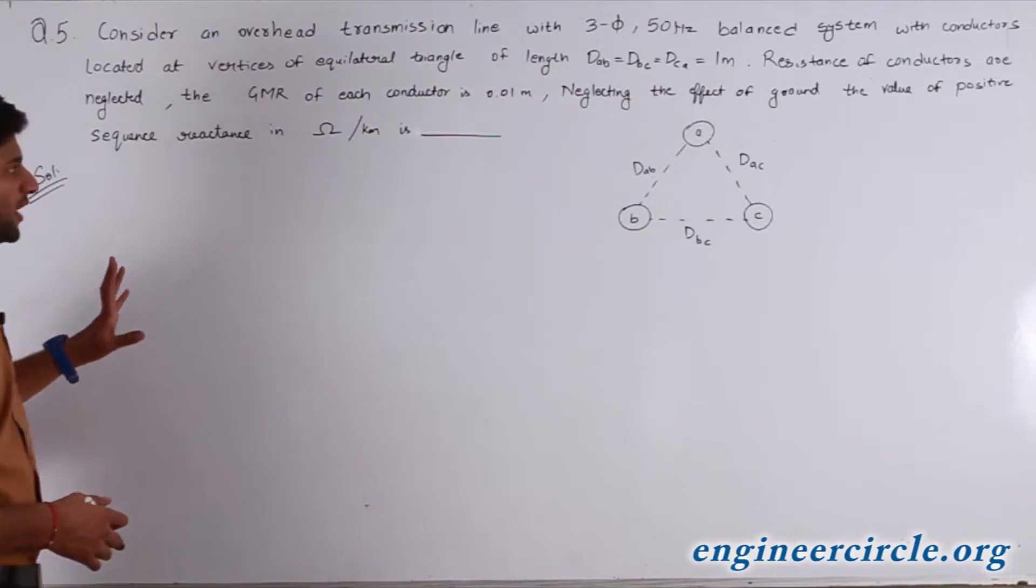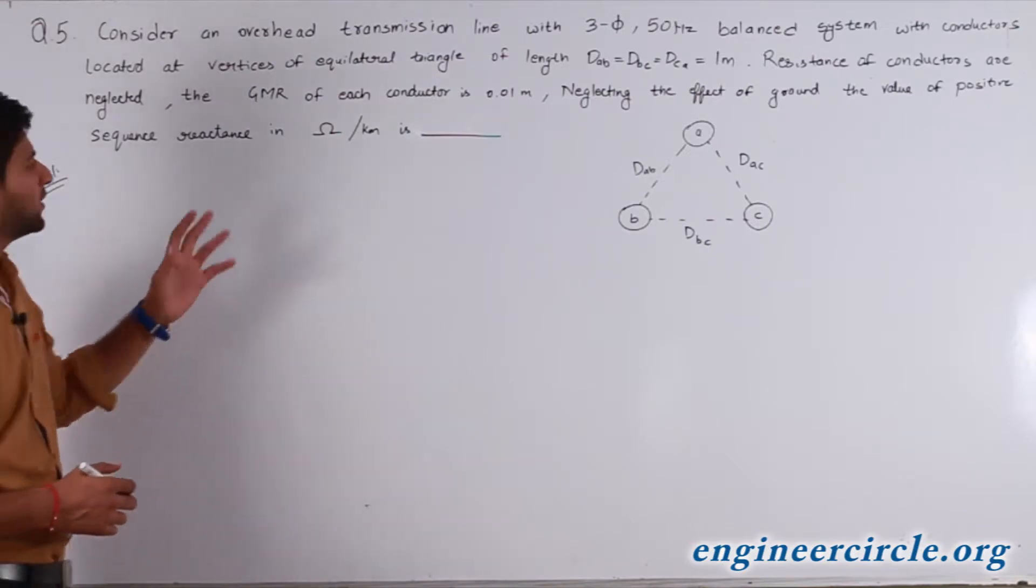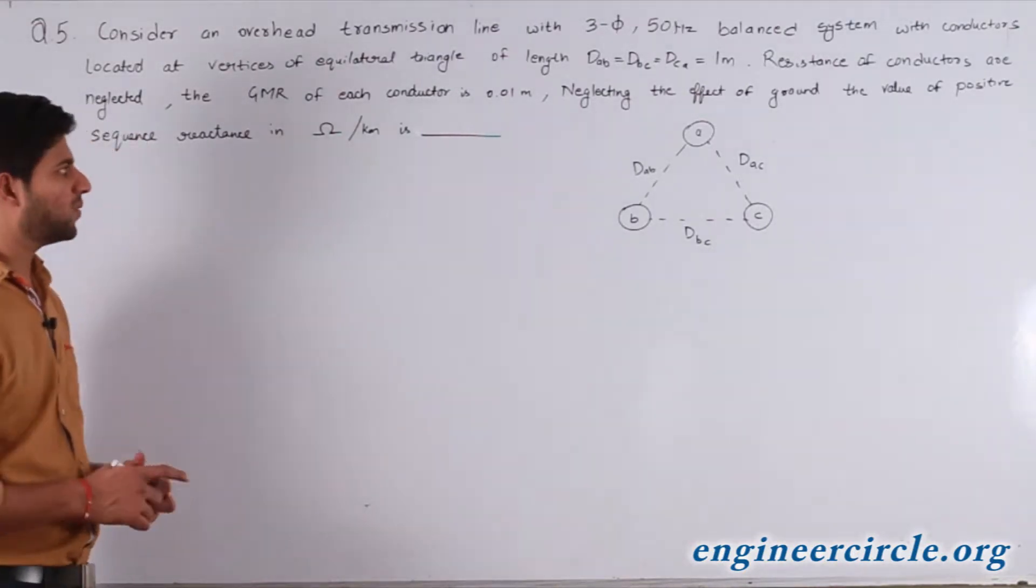In this question, we have to consider an overhead transmission line with a three-phase 50 hertz balanced system with conductors located at vertices of an equilateral triangle, each having a length of 1 meter.